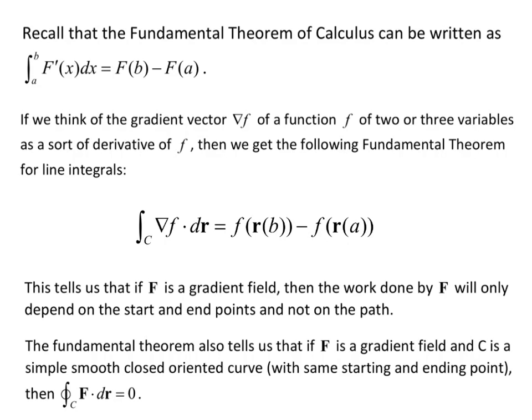The fundamental theorem also tells us that if F is a gradient field and curve C is a simple, smooth, closed, oriented curve — so closed means with the same starting and ending point, so a loop — then the line integral over curve C of F dotted with dr equals zero.